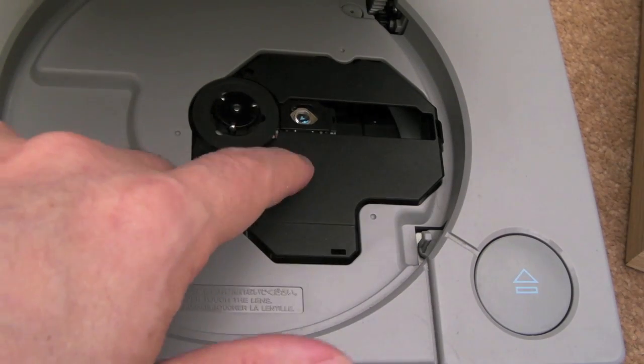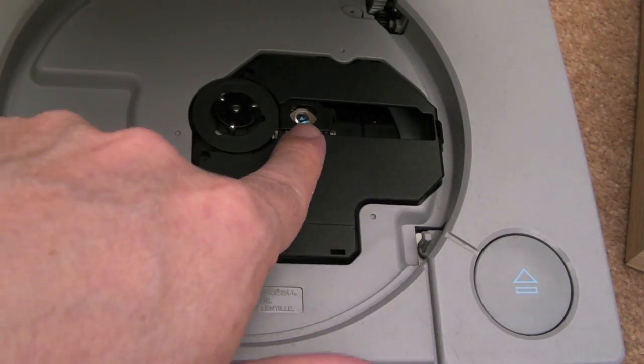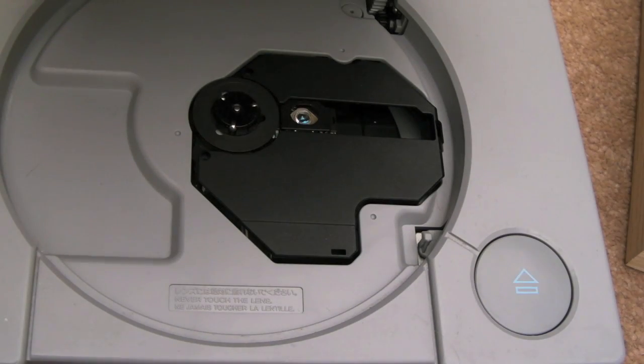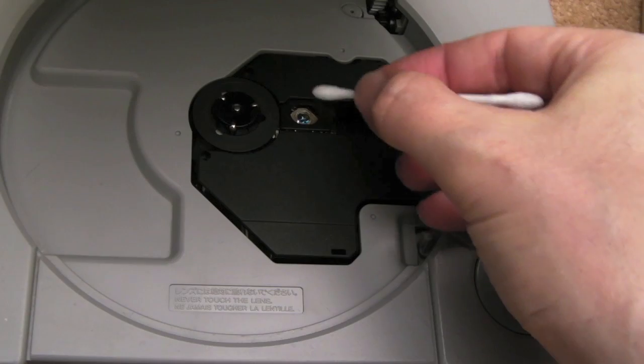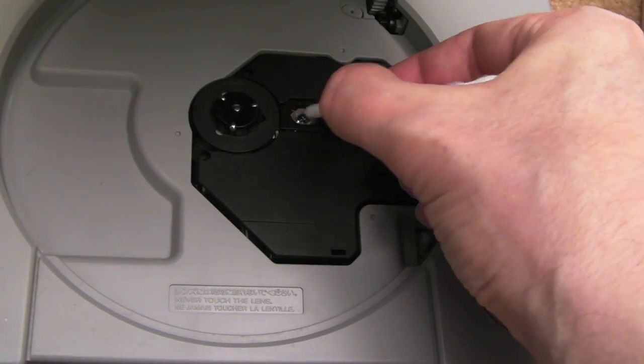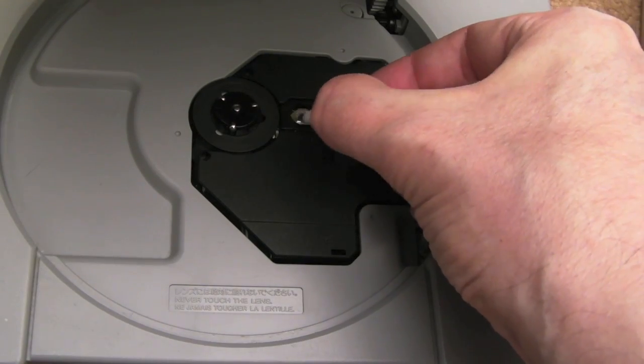The first thing I'll do before I do that, before I swap it out, is just clean the lens up there with a bit of IPA. So I've got some IPA on a cotton bud there and we'll just give it a going over. Don't put too much pressure on there.